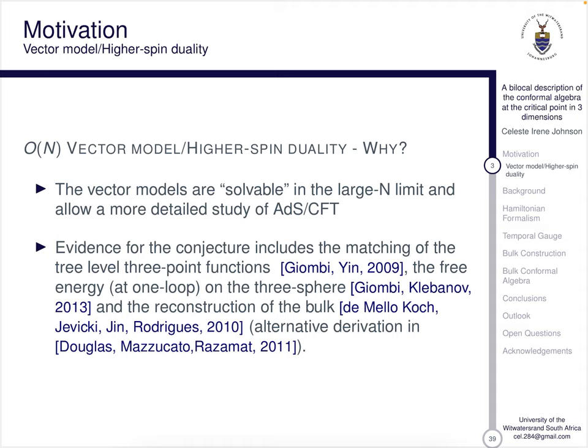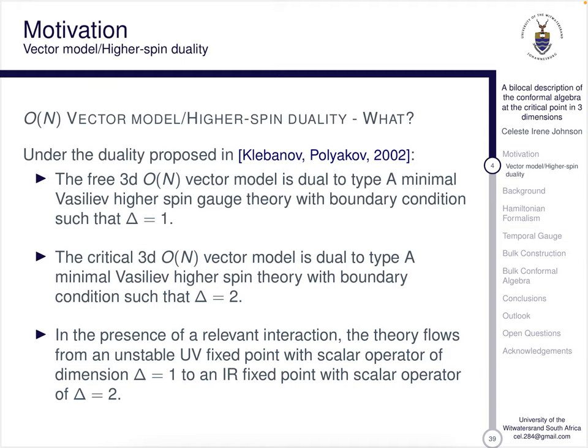There's been quite a bit of evidence for this conjecture over the last few years in the form of matching tree level three-point functions, free energy at one loop on the three sphere, as well as reconstruction of the bulk. The salient points from Klebenov and Polyakov's 2002 paper are: the free 3D O(N) vector model is dual to type A minimal Vasiliev higher spin gauge theory with delta equals one. The critical 3D O(N) vector model is dual to type A minimal Vasiliev theory with delta equals two. And in the presence of a relevant interaction, the theory flows from an unstable UV fixed point with delta equals one to an IR fixed point with delta equals two.